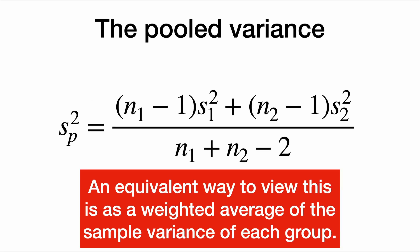And the equivalent way to write this is that the pooled variance is a weighted average of the variance of the first group, weighted by its sample size, plus the variance of the second group, weighted by its sample size. It's a weighted average of the two variances.